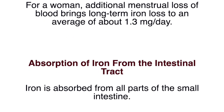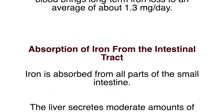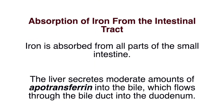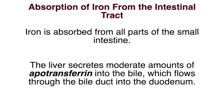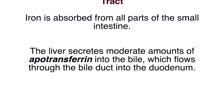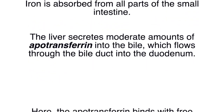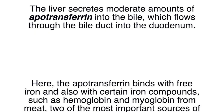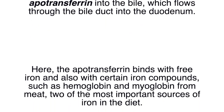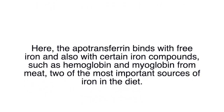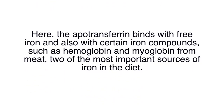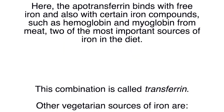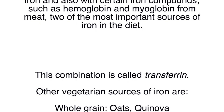Absorption of iron from the intestinal tract: Iron is absorbed from all parts of the small intestine. The liver secretes moderate amounts of apotransferrin into the bile, which flows through the bile duct into the duodenum. There, the apotransferrin binds with free iron and also with certain iron compounds such as hemoglobin and myoglobin from meat — two of the most important sources of iron. This combination is called transferrin.